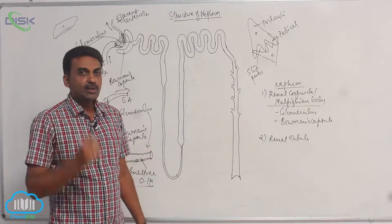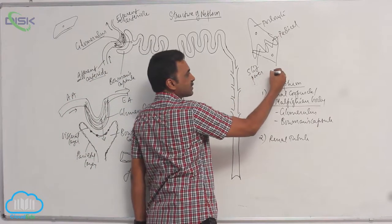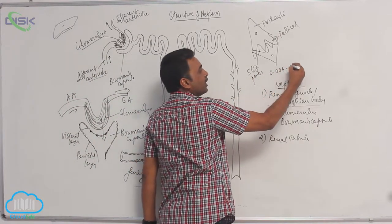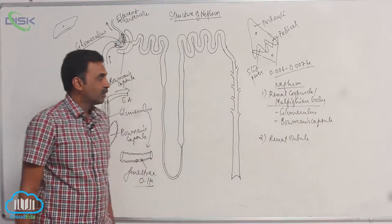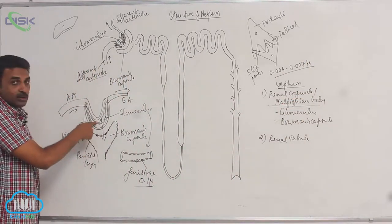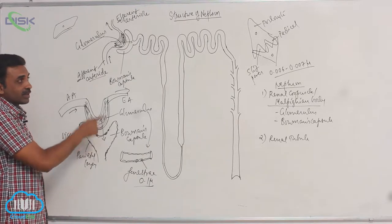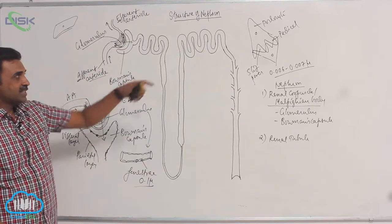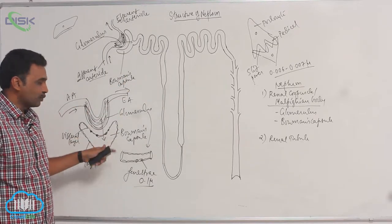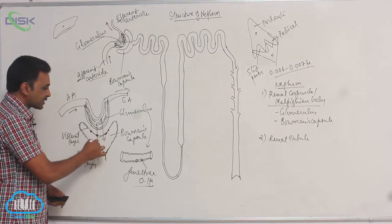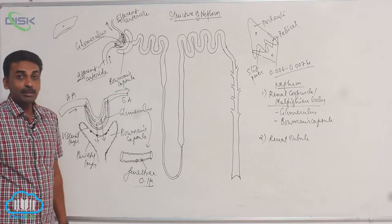The filtration pores are extremely small — 0.006 to 0.007 microns in diameter. So the glomerulus has fenestrae, and the slit pores are present between the pedicels of podocytes. Through these structures, substances are filtered from the glomerulus towards Bowman's capsule.